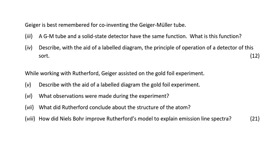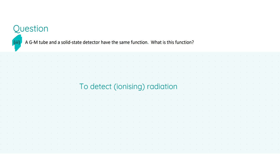For the next part of our question, we're told that Geiger is best remembered for co-inventing the famous Geiger-Muller tube, which will be the focus for these two parts of our question. In part 3, we are told that a Geiger-Muller tube and a solid-state detector have the same function. What is this function? To put it simply, it's just to detect ionizing radiation, and this will get you three marks for stating this.